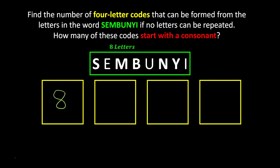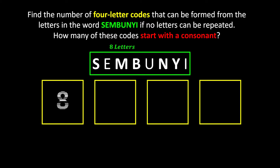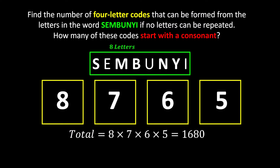After I pick one letter — let's say S — I will cross it off from the selections. Now we are left with only 7 ways. Let's say the second time I pick B, so I will leave only 6. For the third slot, let's say I pick N — I'm left with only 5 choices. Since this is a continuous event where I'm picking one letter after another, I can use the multiplication rule to multiply all the numbers of ways together.